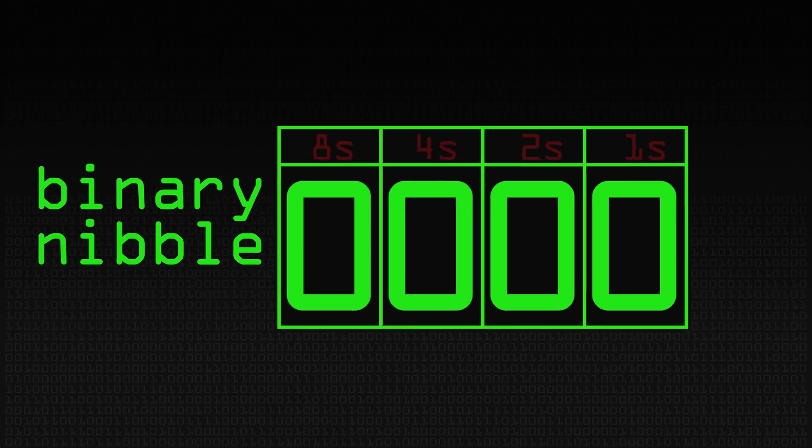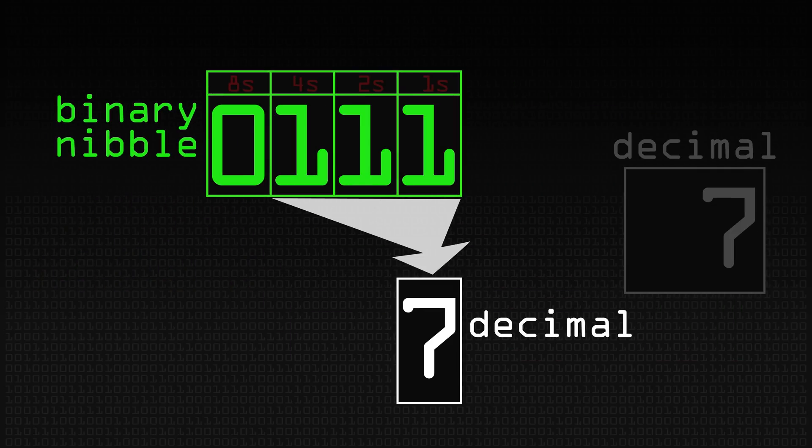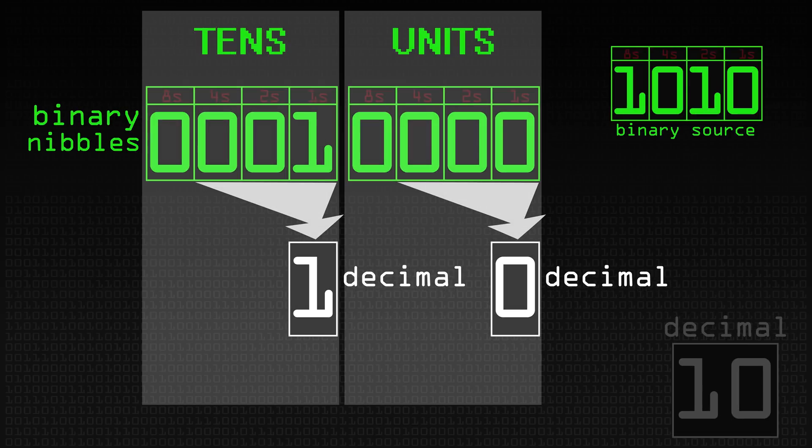The moment a representation, even in one nibble, gets to 1010 — that is 10 — you can't leave it as 1010 in a single nibble. You've now got to have two nibbles: the left nibble with a 1 in it, and the right nibble looking like 0. You can't compress it into a single nibble of 1010 and tell everyone they'll have to learn hex to understand their bank balance. That's not going to go down well.